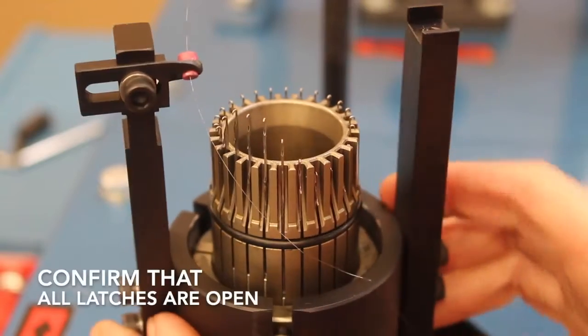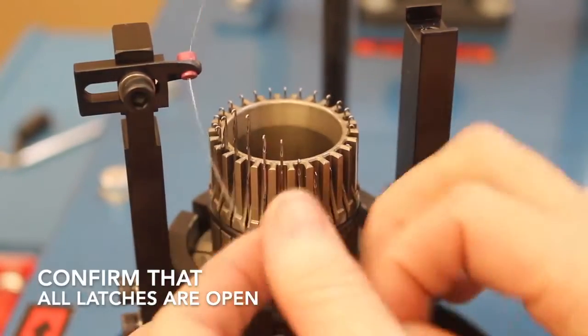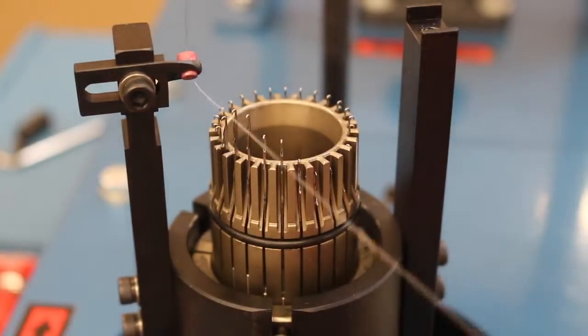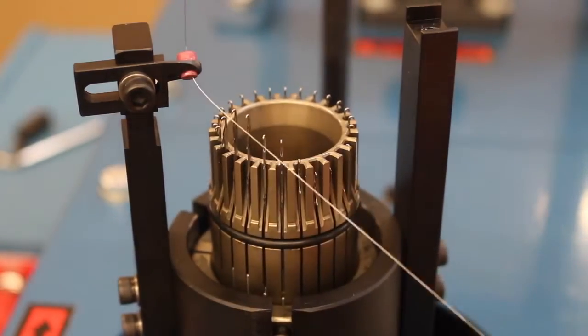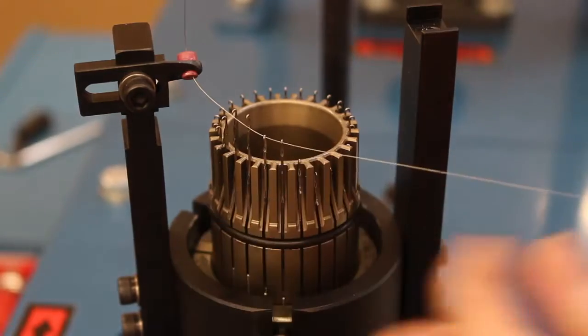Be sure that all the latches of the needles are open. Draw approximately 18 inches of wire, being sure that the wire is coming off the spool smooth.